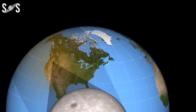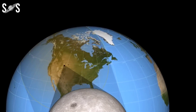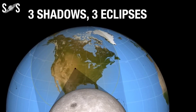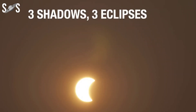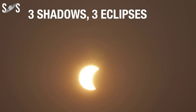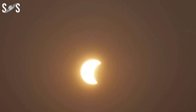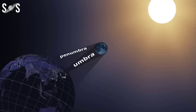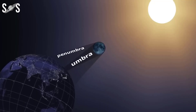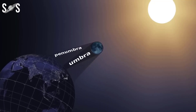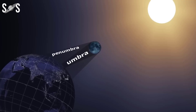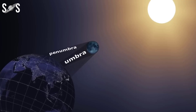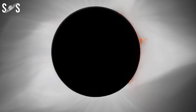Three shadows, three eclipse types. A solar eclipse occurs when the moon's shadow falls on Earth. The shadow consists of three areas: an umbra, a penumbra, and an antumbra. The type of eclipse we see depends on the part of the moon's shadow we are in.